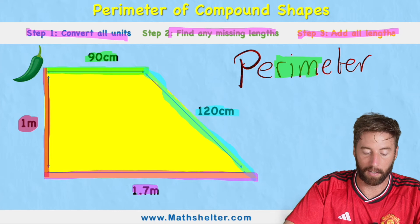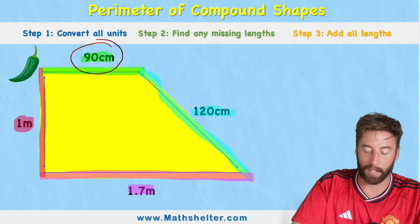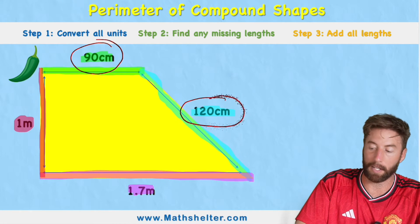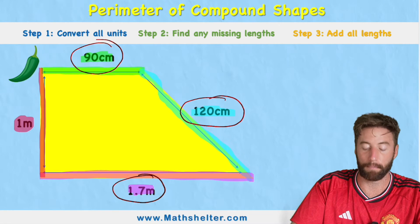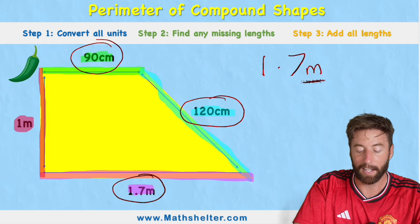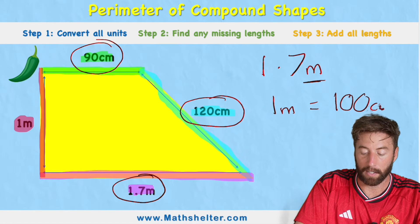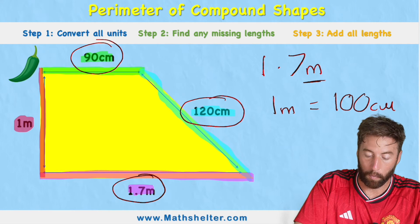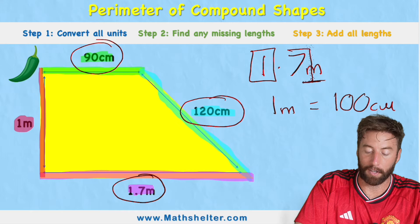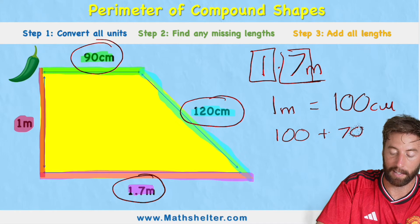Thinking back to step one, we need to convert all units so they're the same before adding them. The top measurement is in centimeters, so let's convert everything to centimeters. 120 centimeters is already fine. We have 1.7 meters — every meter is made up of 100 centimeters, so 1 meter equals 100 centimeters. For 1.7 meters, we have 1 whole meter (100 centimeters) plus 0.7 of a meter (70 centimeters), giving us 170 centimeters.